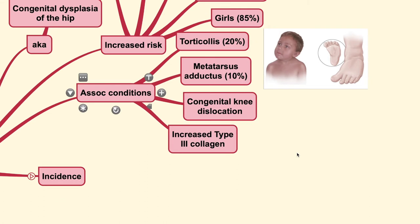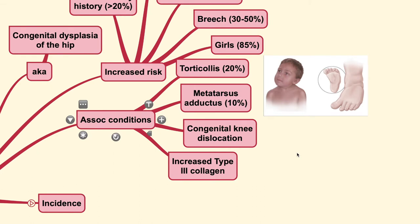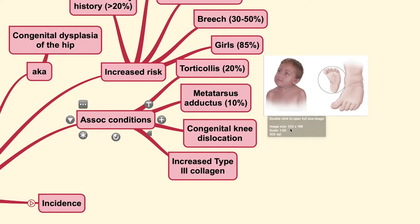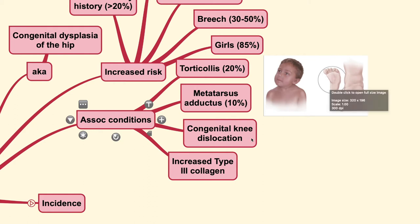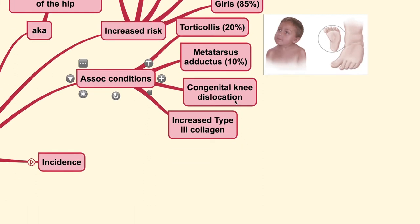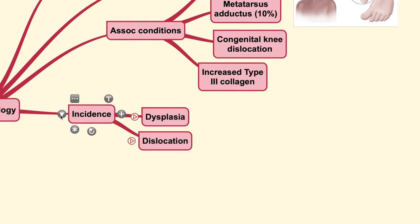For the associated conditions, DDH is associated with a tight or small room intrauterine. Various conditions may be associated with it, which include torticollis — also known as a wry neck condition, where the patient's neck is laterally turned and rotated toward the other side — metatarsus adductus, with adductus deformity of the first ray, and congenital knee dislocation.